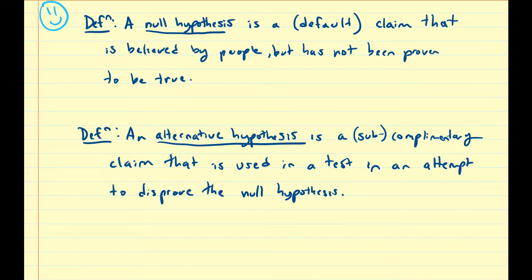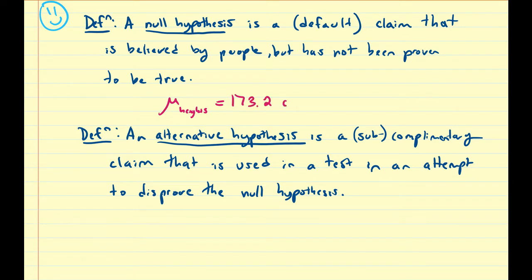The alternative hypothesis is usually used in a test in an attempt to disprove the null hypothesis. As an example, let's assume the null hypothesis for the mean of heights for a set of people in the classroom is equal to 173.2 centimeters. This would be the null hypothesis, usually abbreviated as H with a subscript 0 or zero.